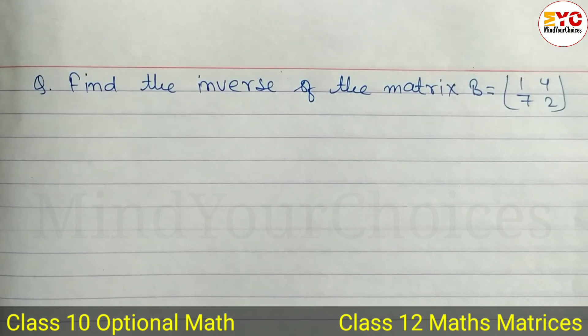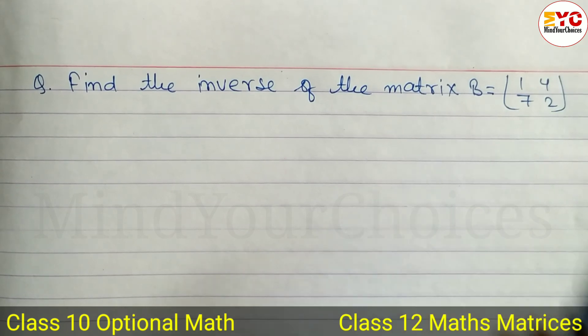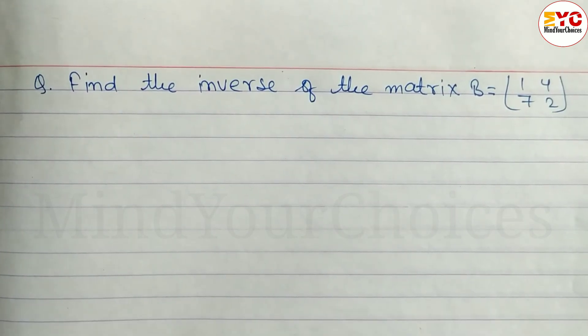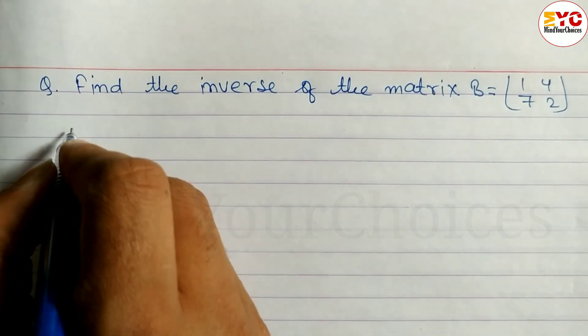In this question we will learn how to find the inverse of any matrix. Here one matrix is given: B equals [1 4; 7 2], and I'm going to teach you how to find the inverse of this matrix.